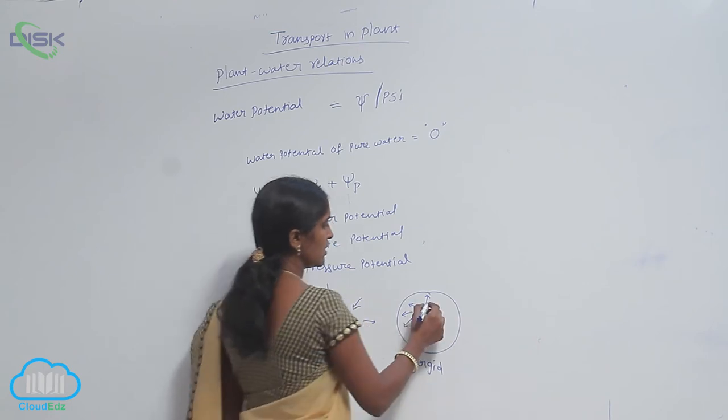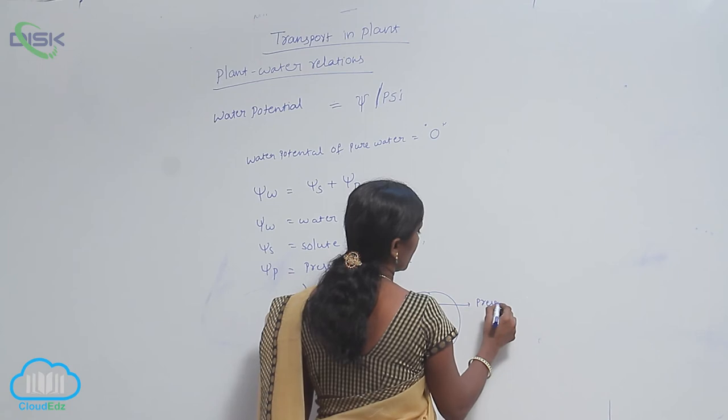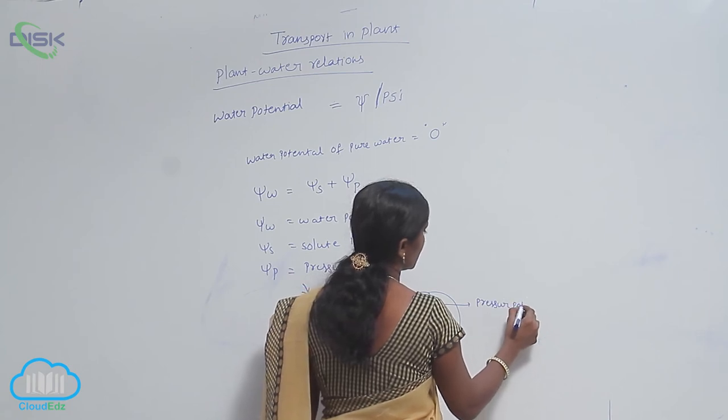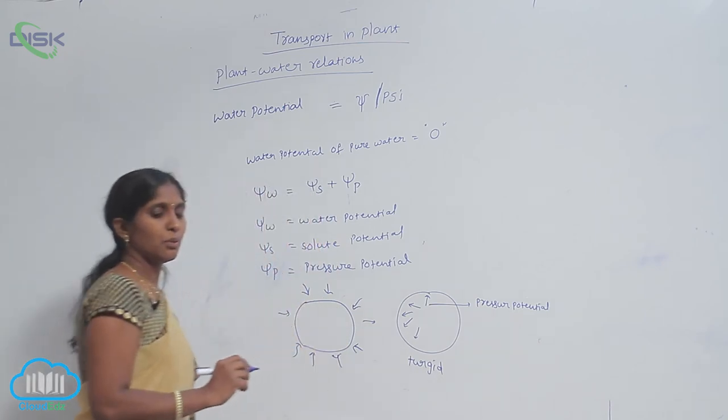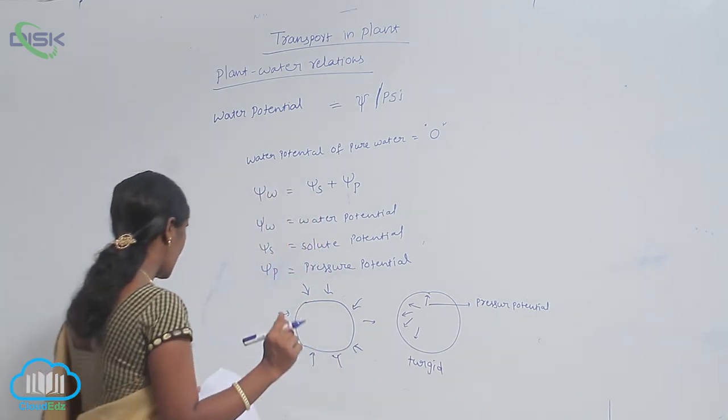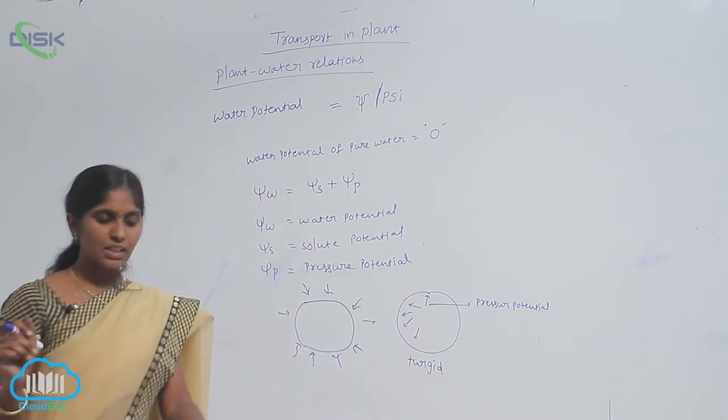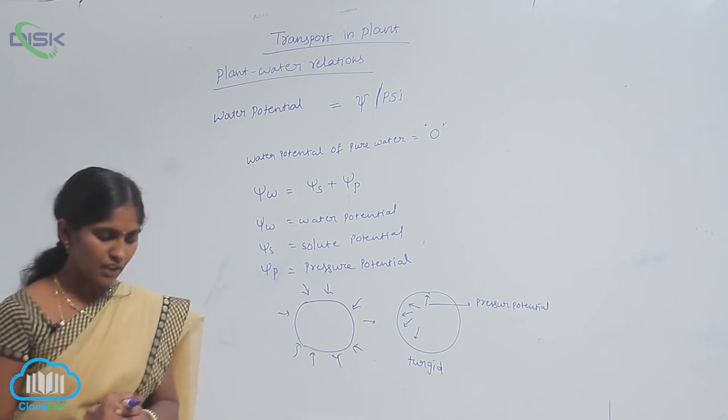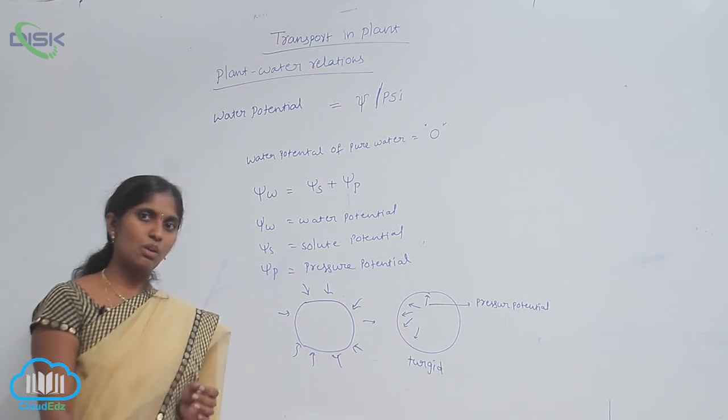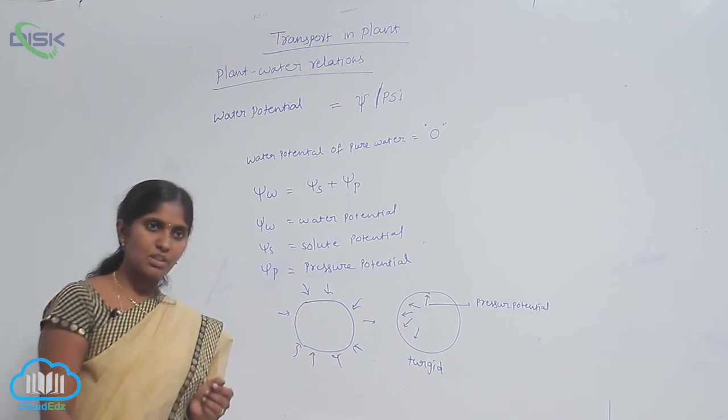The pressure is called pressure potential. Pressure potential is defined as the pressure exerted by the protoplast due to the entry of water against the rigid cell wall.